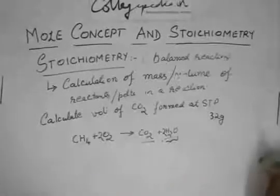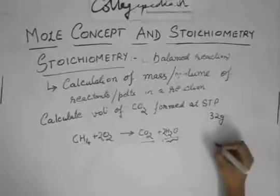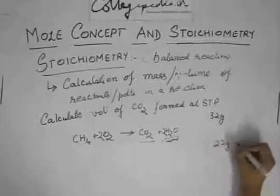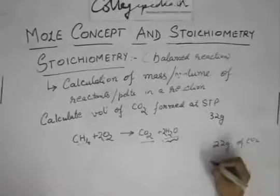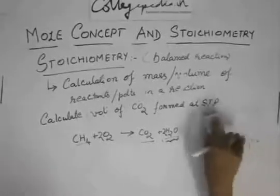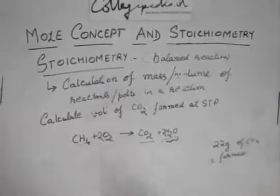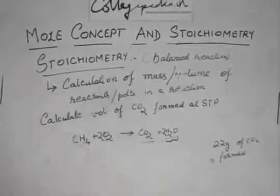And again they can give you the reverse type of question like it is observed that 22 gram of CO2 is formed. Now this 32 gram is not there in the question. So 22 gram of CO2 is formed in the reaction, calculate the amount of methane.